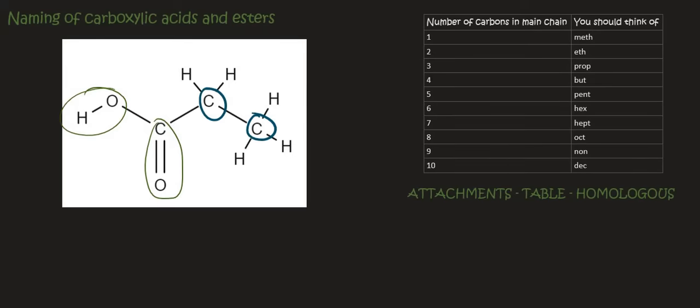We just look at how many carbons there are. So that's three. So that's a prop. And then for these ones we're also going to add the an. And then because it's a carboxylic acid you're going to add the word oic acid. So it's propanoic acid. And that's it.